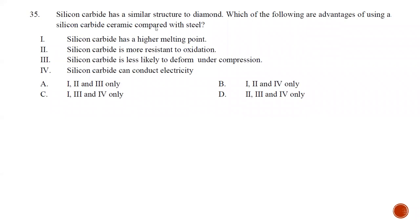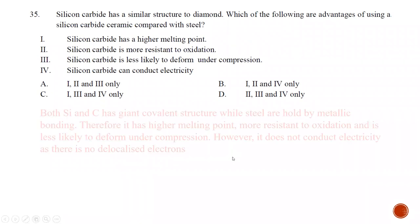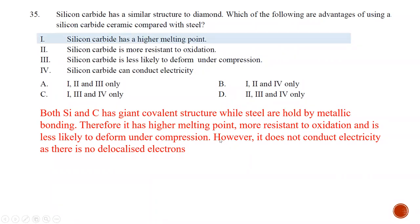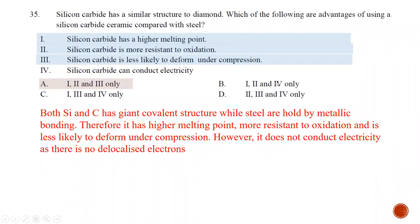Question number thirty-five: silicon carbide, SiC, has a similar structure to diamond. What are the advantages of using silicon carbide ceramic compared to steel? Steel is a metallic alloy held by metallic bonds, while SiC is a giant covalent structure like diamond. Giant covalent structures have higher melting points than metallic bonds. SiC is more resistant to oxidation because all covalent bonds are bonded together. It is less likely to deform under compression. The only incorrect statement is that silicon carbide can conduct electricity — it cannot, similar to diamond, because there are no delocalized electrons. The best answer is statements one, two, and three.